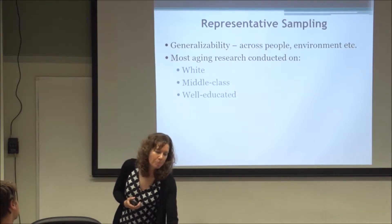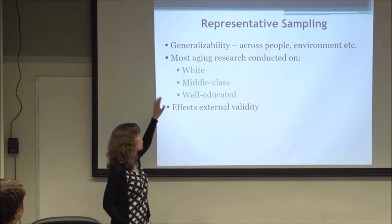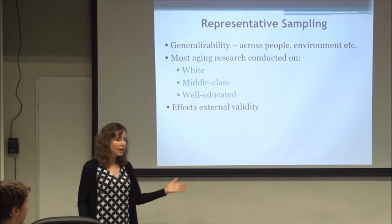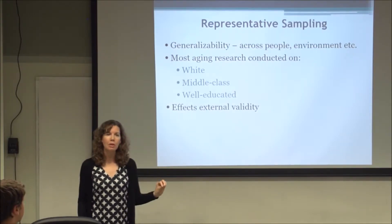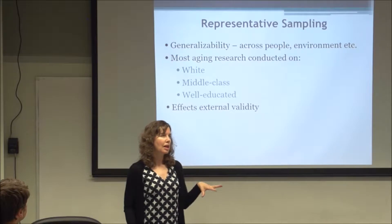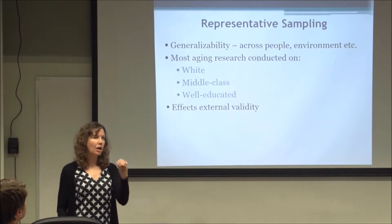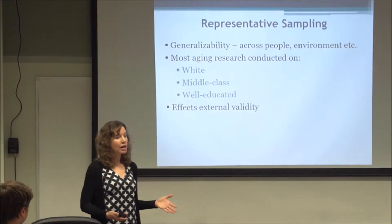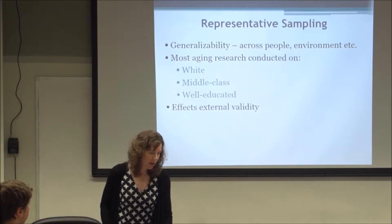There has been a big push to change this because it really affects external validity. What is true for white, middle-class, well-educated adults may not be true for lower-income or other ethnic groups or people who are not as highly educated. When submitting a grant proposal, you typically have to show that you will get a diverse group of participants. Recently, rural communities have been added as a diversity category, which has been helpful in this region, as there is a need to capture more information about that group.